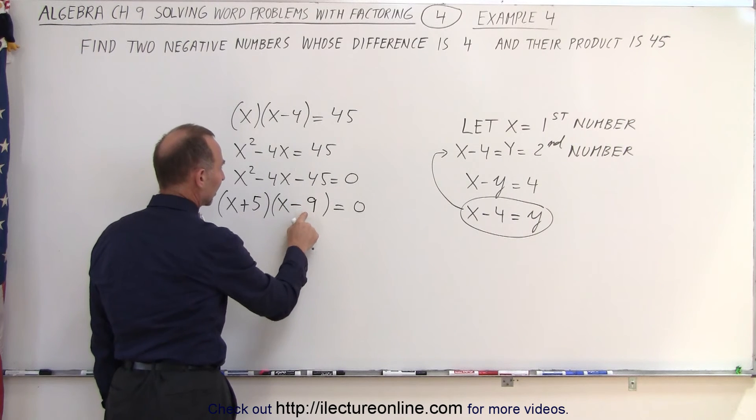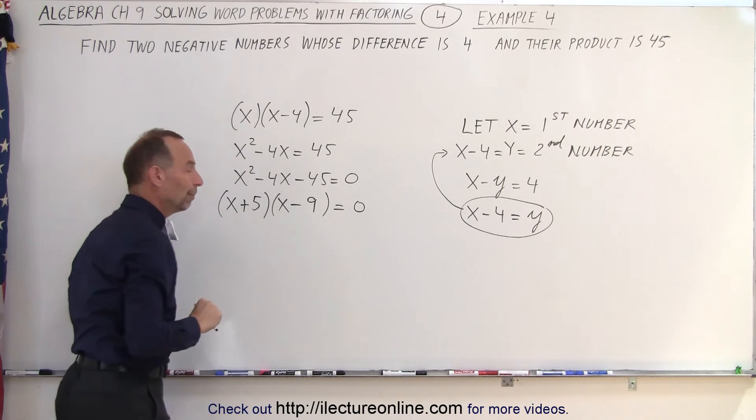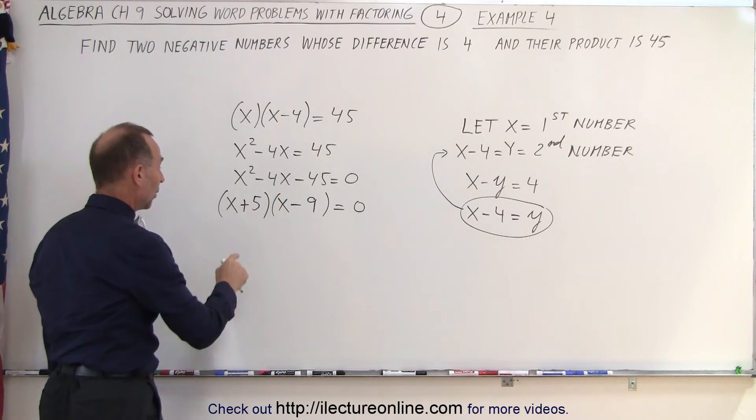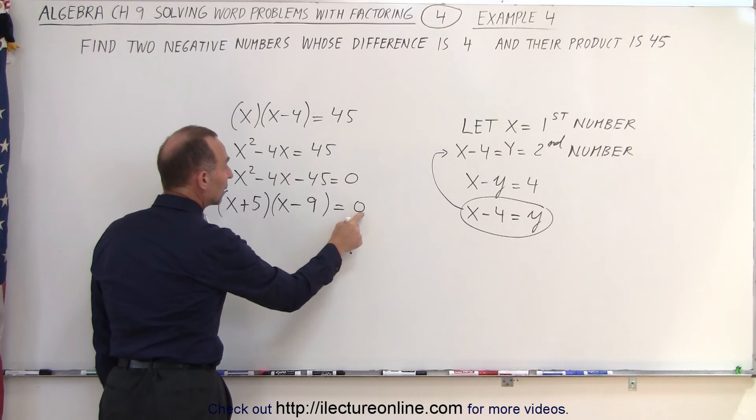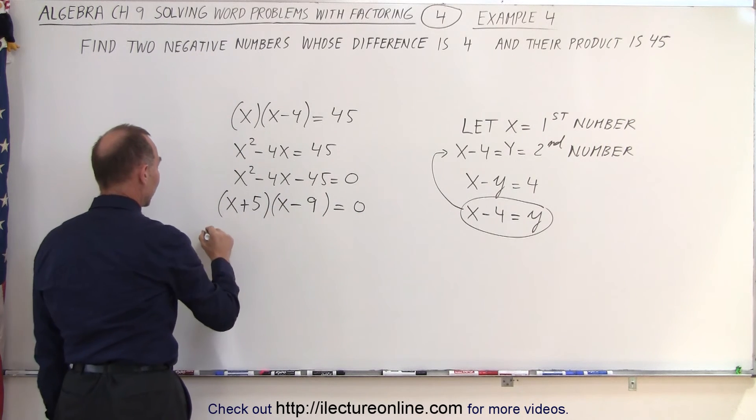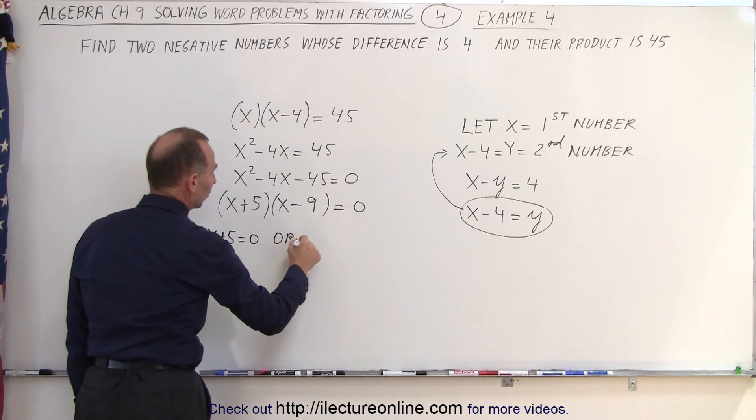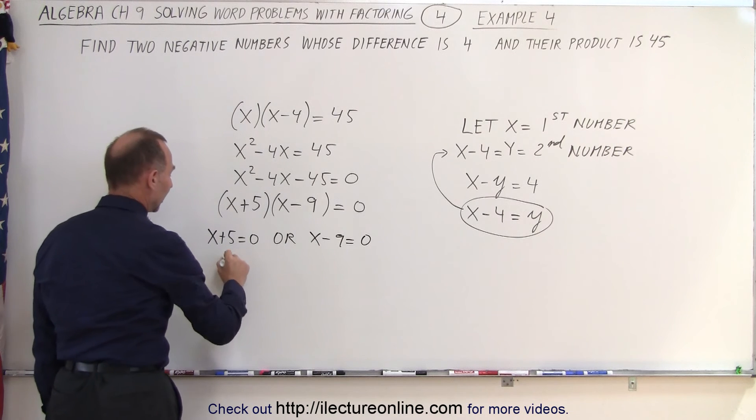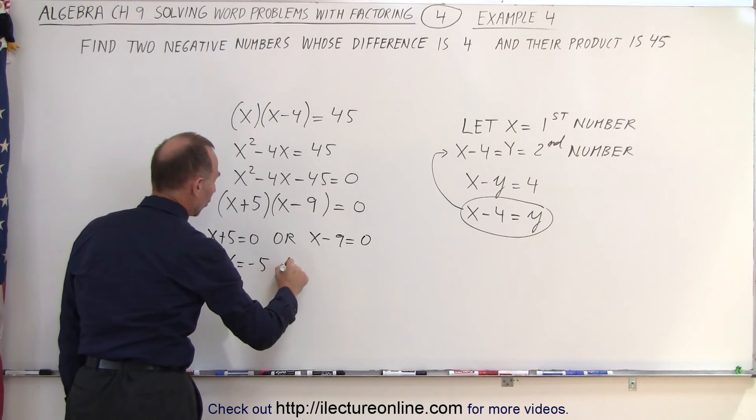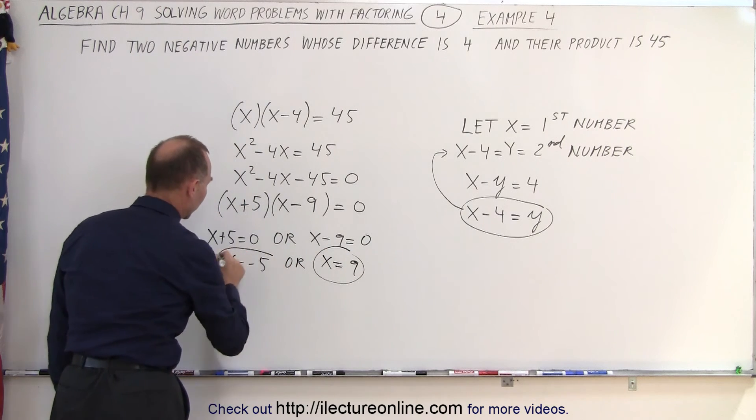A positive 5 times a negative 9 gives me negative 45, and 5 minus 9 gives me negative 4. So those are the two numbers. When I have two binomials multiplied together being equal to 0, that implies that x plus 5, the first one, must equal 0, or the second binomial must equal 0, one or the other, which means that x equals negative 5, or x equals 9. So these are the two possibilities.